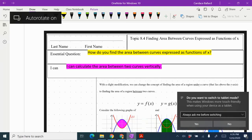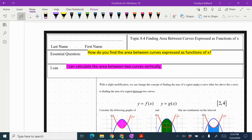In this video, we're going to talk about topic 8.4, finding the area between curves expressed as a function of x. So what we're going to do is we're going to ask ourselves, how do we find the area between curves expressed as a function of x? And by the end of the lesson, you're going to be able to say, I can calculate the area between two curves vertically.